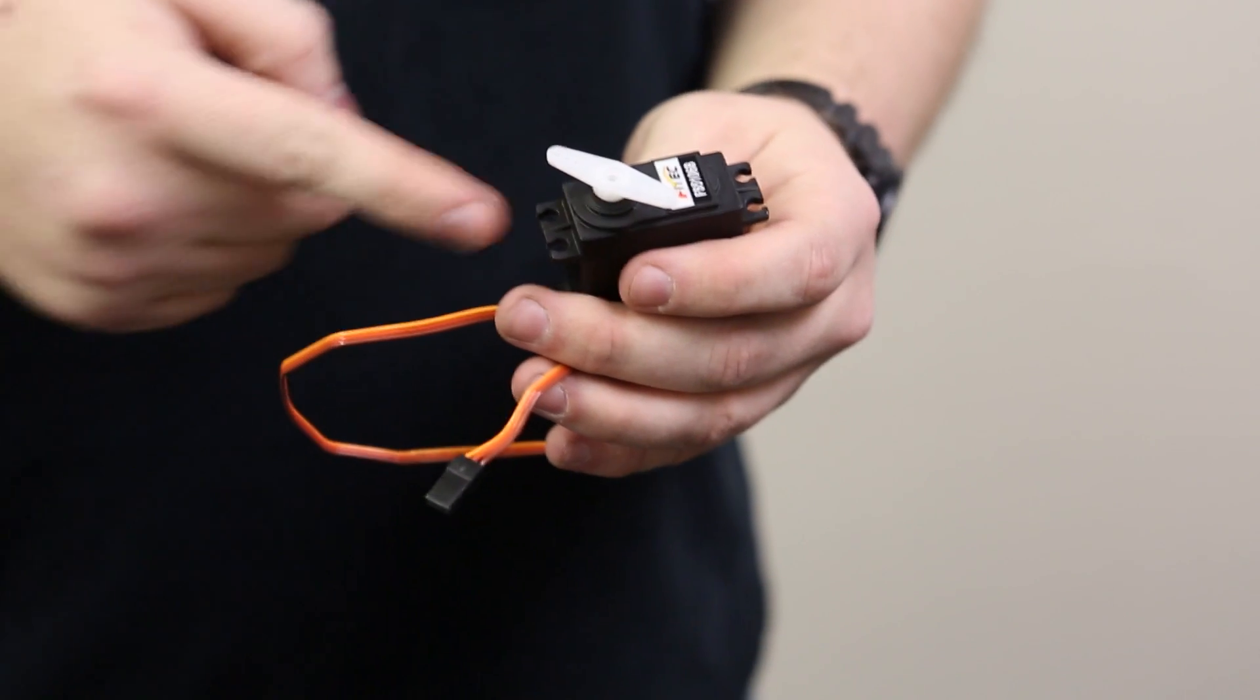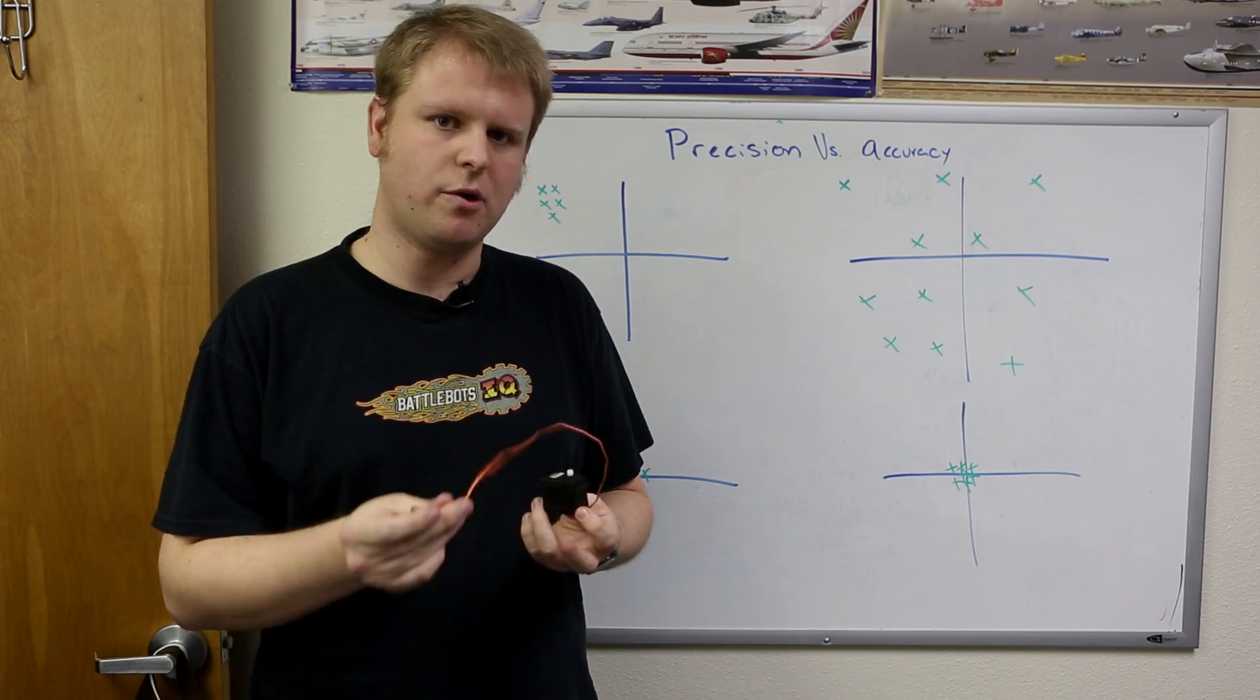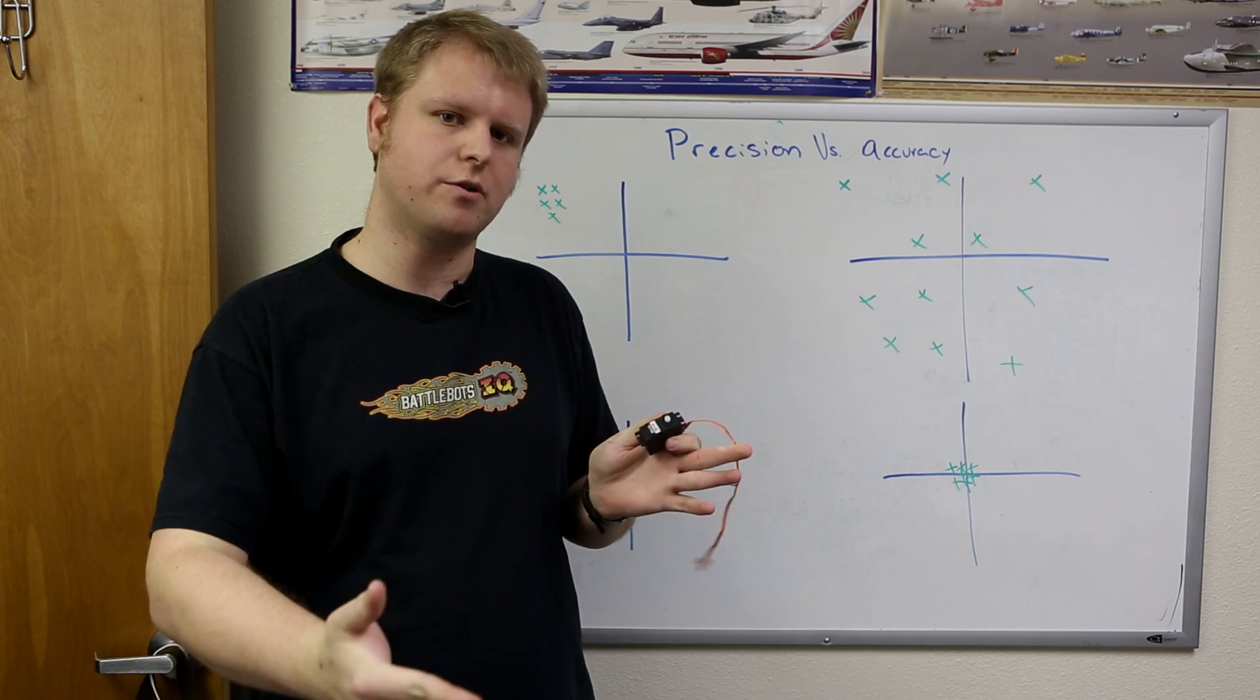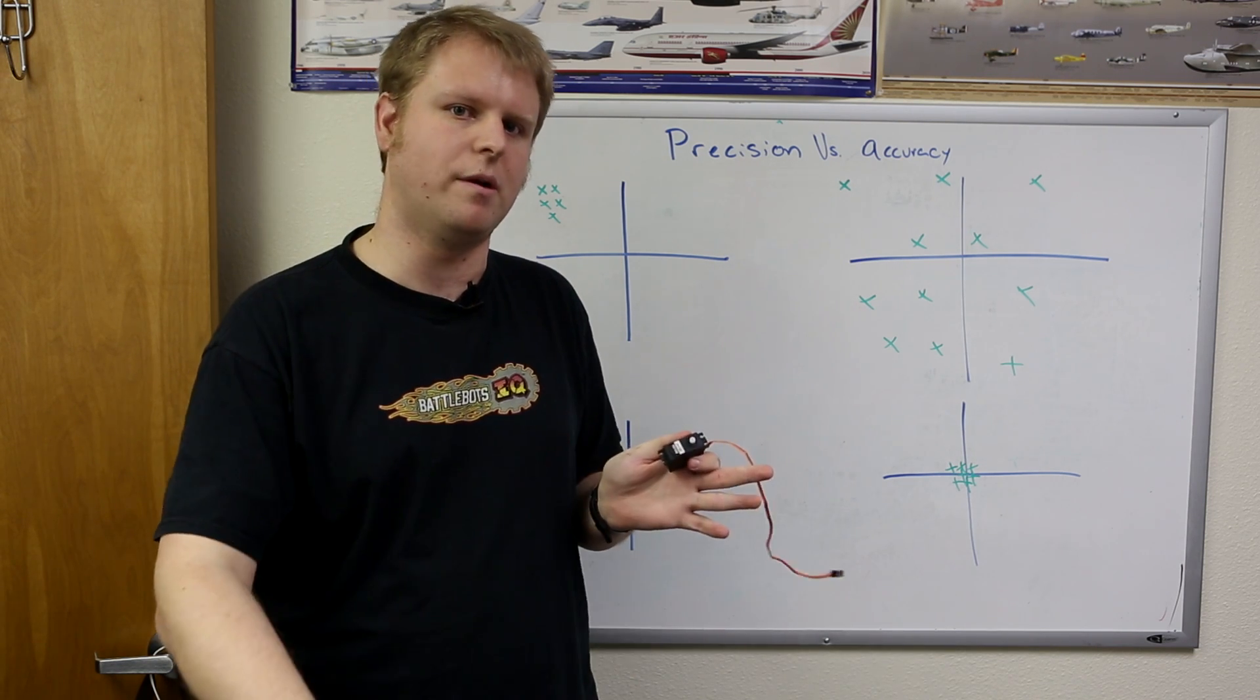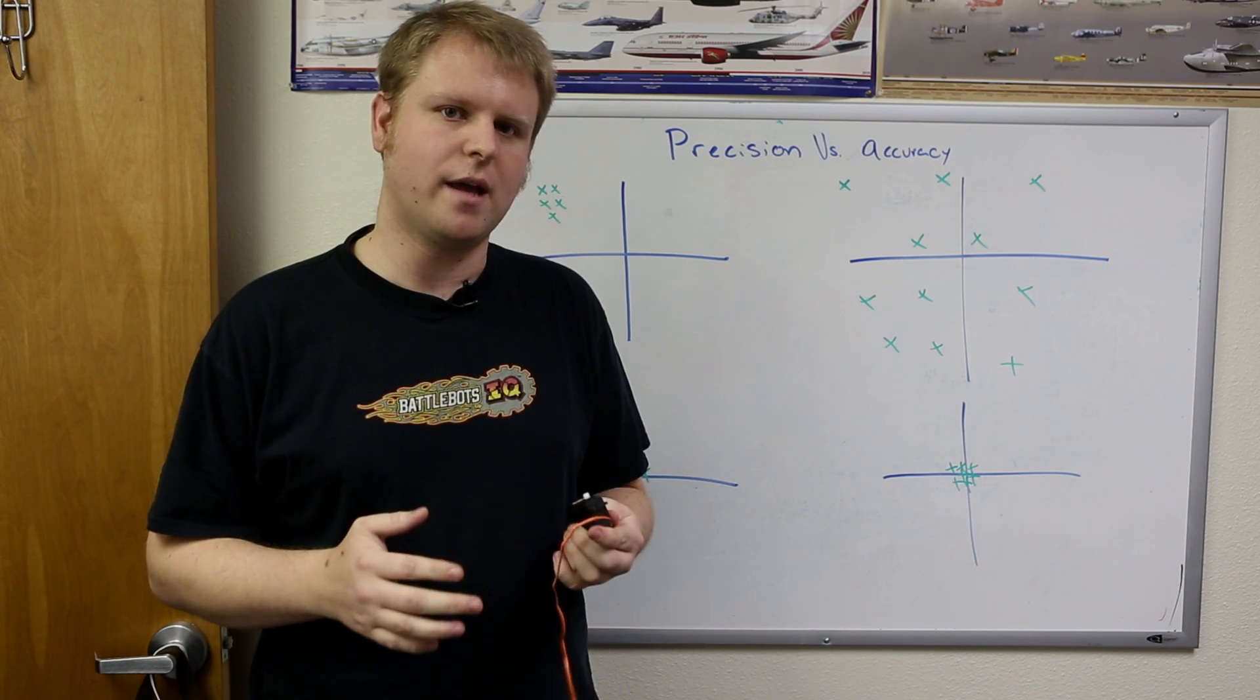To take it yet a step further, we could use something like an analog servo. Now a servo has an input signal and an output angle that's very close to our gantry where we have an input signal and an output position. However, there's no feedback in the system yet.